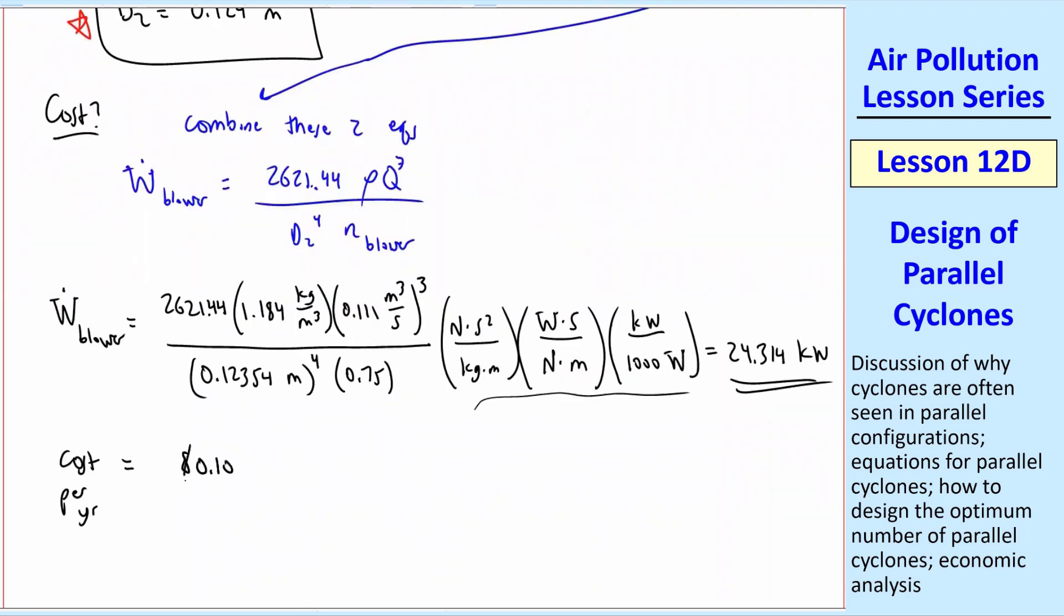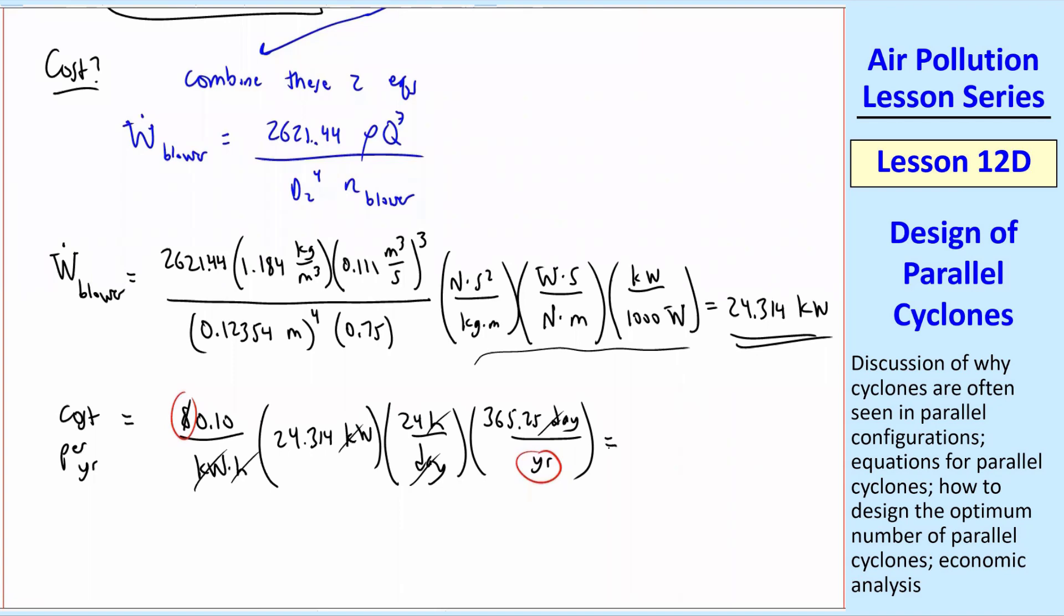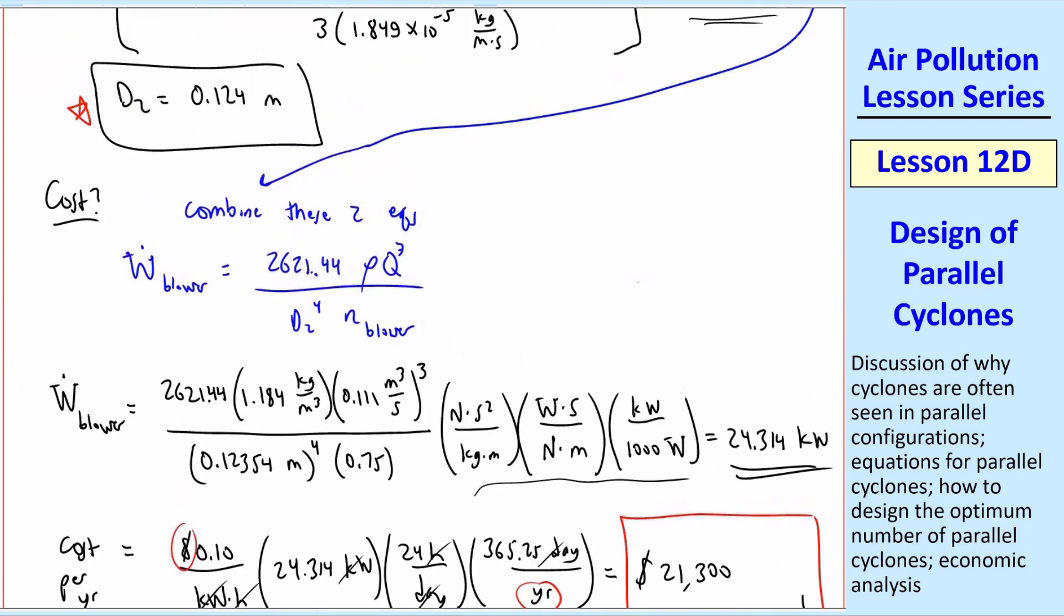How do we get the cost? This is per year. I have an electricity rate, $0.10 per kilowatt hour. So that's kilowatt times hour. I have the power, 24.314 kilowatts, and I just need to get this into year. So there's 24 hours per day, and counting leap years, 365.25 days per year. So that should get rid of hours and days, and we have dollars. In the end, we end up with dollars per year, which is what we want. I didn't really have an equation. I just made up this equation as I went by units, and sometimes you have to do that, and I get three digits, $21,300 per year. So that's actually quite expensive, $21,300 per year, just to run the cyclone. That doesn't count buying the cyclone or anything, just electricity to run the thing. This is for one cyclone, one large cyclone. It's actually not that large, only 0.124 meters, 12 centimeters, so it's not very big for this application.